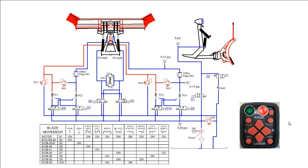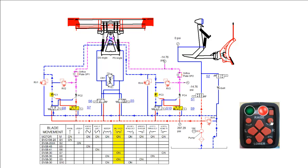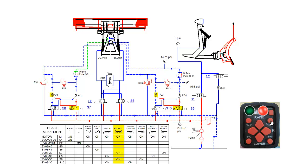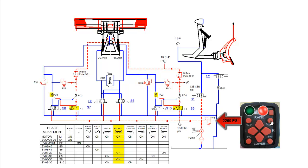We will now perform the retract function. We begin by pushing the retract button on the snowplow control. Hydraulic fluid from the pump flows through the shifted S7 and S9 cartridges, through PC2 and PC4, applying pilot pressure to PC1 and PC3, then through the orifice plates to the rod ends of the wing rams. The retracting rams push returning fluid through PC1, PC3, and unshifted S8 and S10 cartridges, then back to tank. When fully retracted, the pump pressure will build to the RV5 pump relief valve setting and directly back to tank.